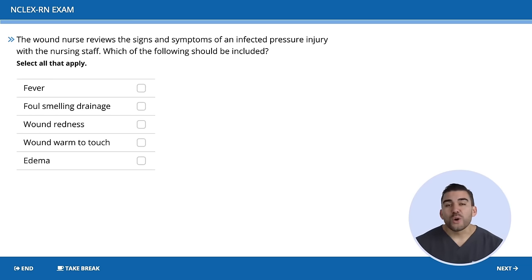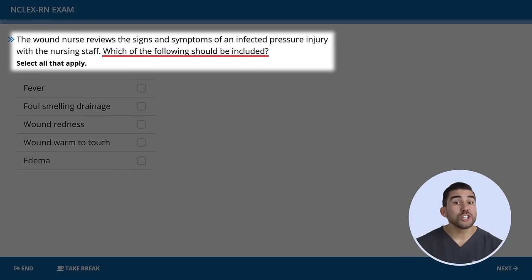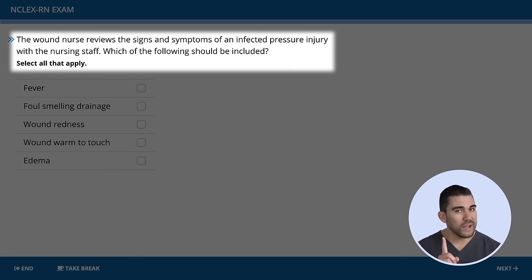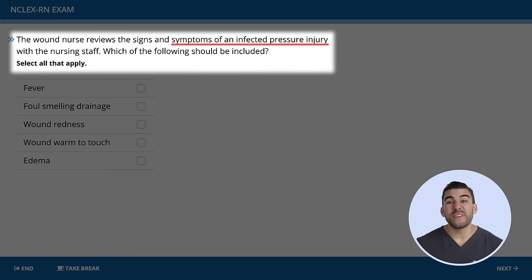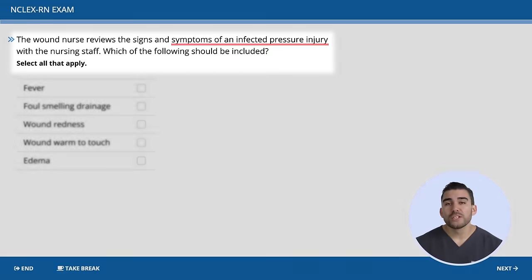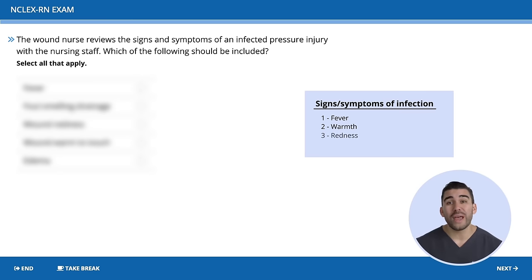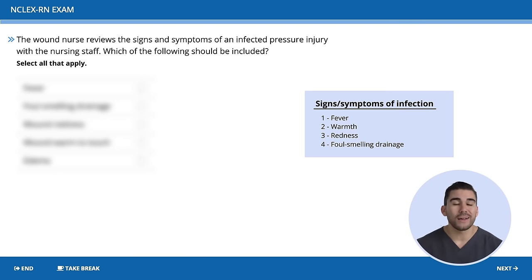Let's dive into the question. It's asking which of the following should be included — a select all that apply question. The problem here is signs and symptoms of an infected pressure injury. For the solution, before looking at the options, think about signs and symptoms of an infection: fever, warmth, redness, or even foul-smelling drainage. If you see those key terms, it's most likely an infection on the NCLEX.